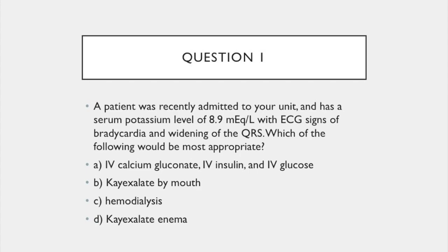Question 1. A patient was recently admitted to your unit and has a serum potassium level of 8.9, with ECG signs of bradycardia and widening of the QRS. Which of the following would be most appropriate? 1. Give the patient IV calcium gluconate, IV insulin, and IV glucose. 2. Give the patient K-exalate by mouth. 3. Give the patient hemodialysis. 4. Give the patient a K-exalate enema.